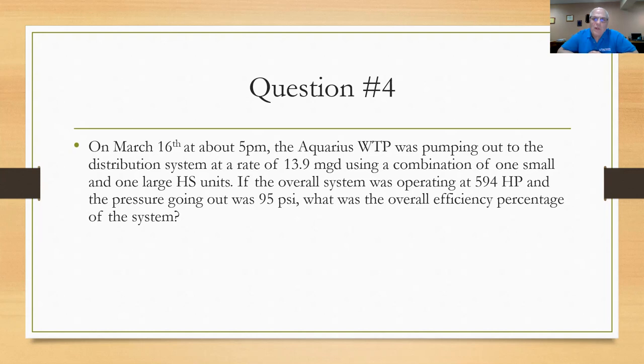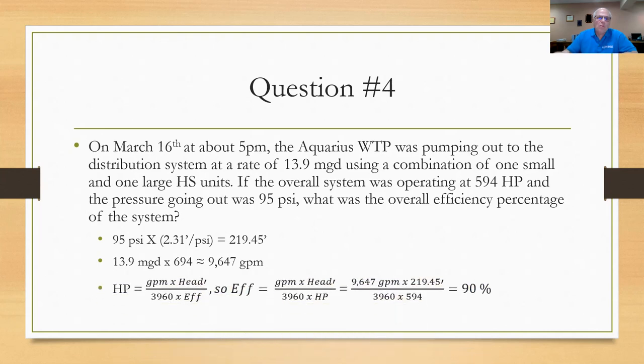If you want to try this, go ahead and stop the video now. Okay, I took the 95 psi and converted it to feet of head because remember, the horsepower formula requires feet of head, not horsepower. So I take the 95, multiply by 2.31, and I come up with a system head of 219.45 feet. The 13.9 mgd multiplied by 694 will give me approximately a flow rate of 9,647 gallon per minute. So I'm moving 9,647 gallon per minute out the door at a head of 219.45 feet. The horsepower we know is the gallons per minute times the head divided by 3960 times the efficiency. So if I want to solve for efficiency, I take the efficiency, move it up to the left, take the horsepower and bring it down. Now my formula becomes gallon per minute times the head over 3960 times the horsepower. When I plug those numbers in, I get roughly a 90% efficiency. Not bad.